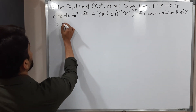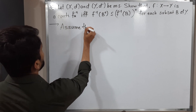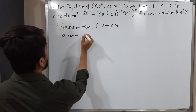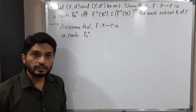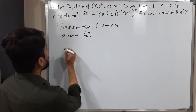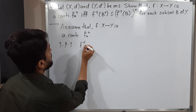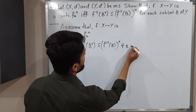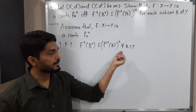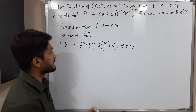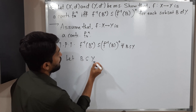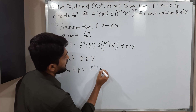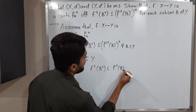Assume that f from X to Y is a continuous function. That means it is continuous at each and every point of the domain X. What we have to prove is that f⁻¹(B°) is a subset of (f⁻¹(B))°, and this is true for each subset B of Y. We will take any arbitrary subset B of Y and prove this relation.